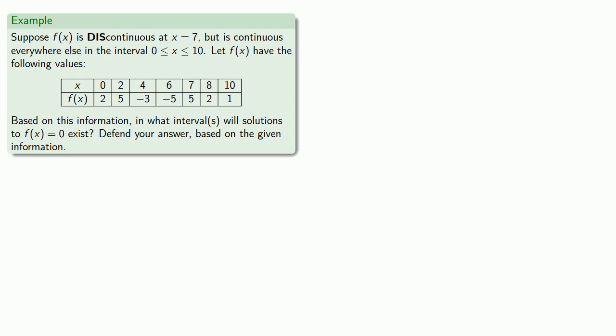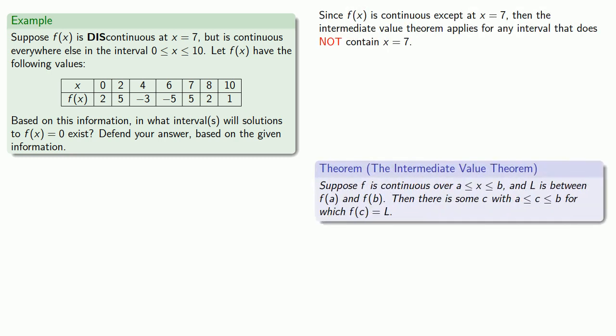So the first thing we might want to find out is, where do we have solutions to f of x equals 0? And we might proceed as follows. Since f of x is continuous except at x equals 7, then the intermediate value theorem does apply for any interval that does not contain x equals 7.